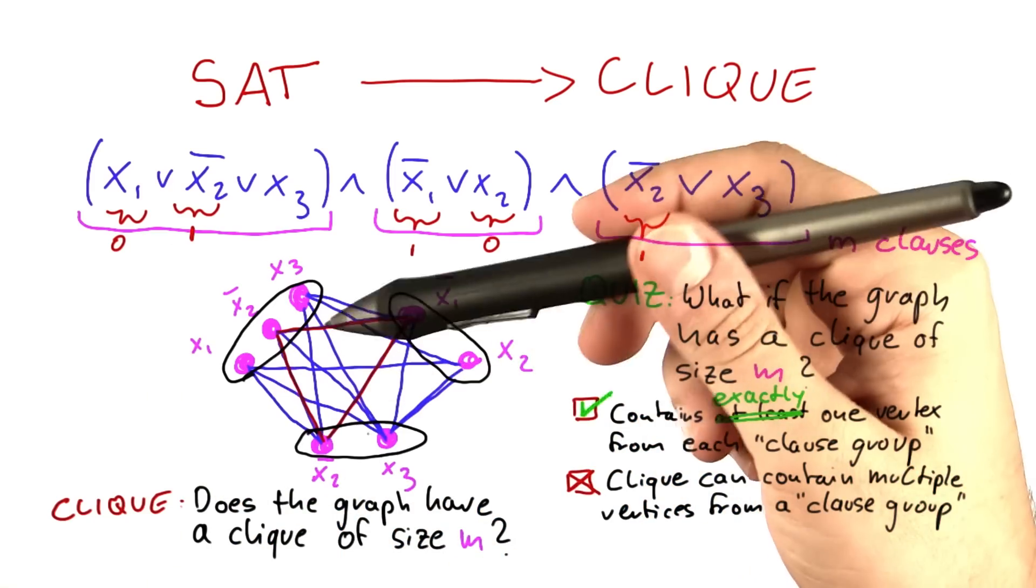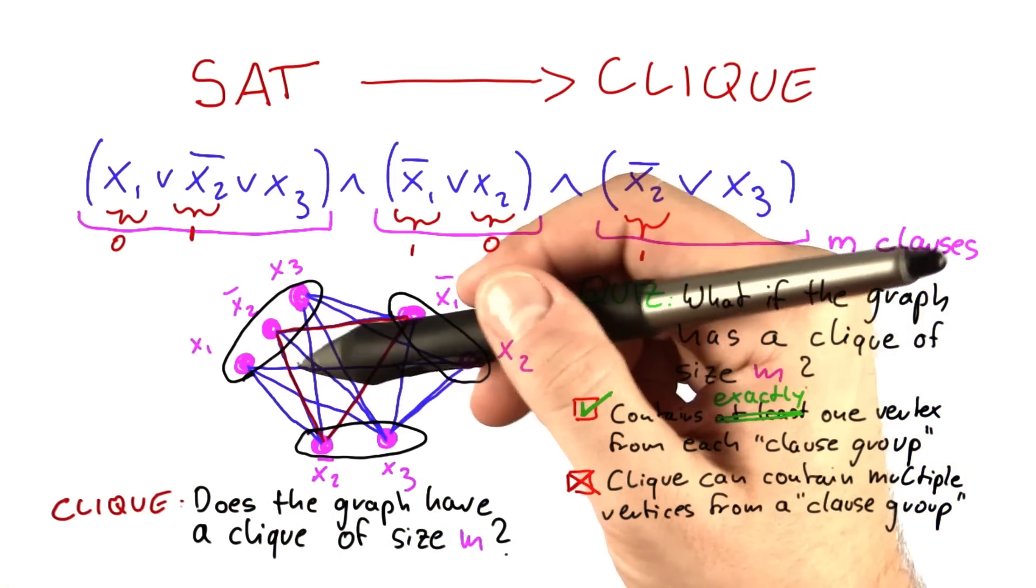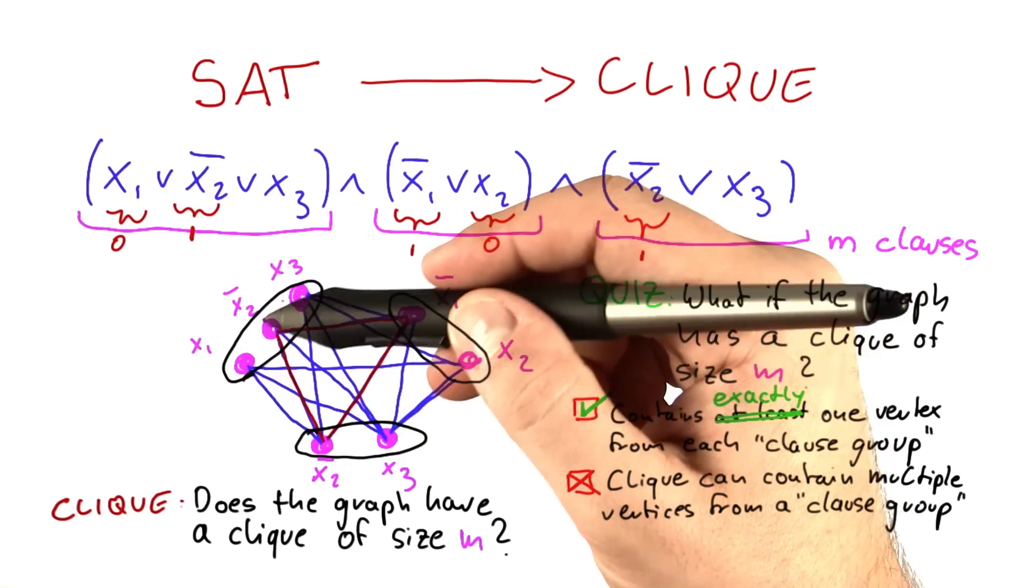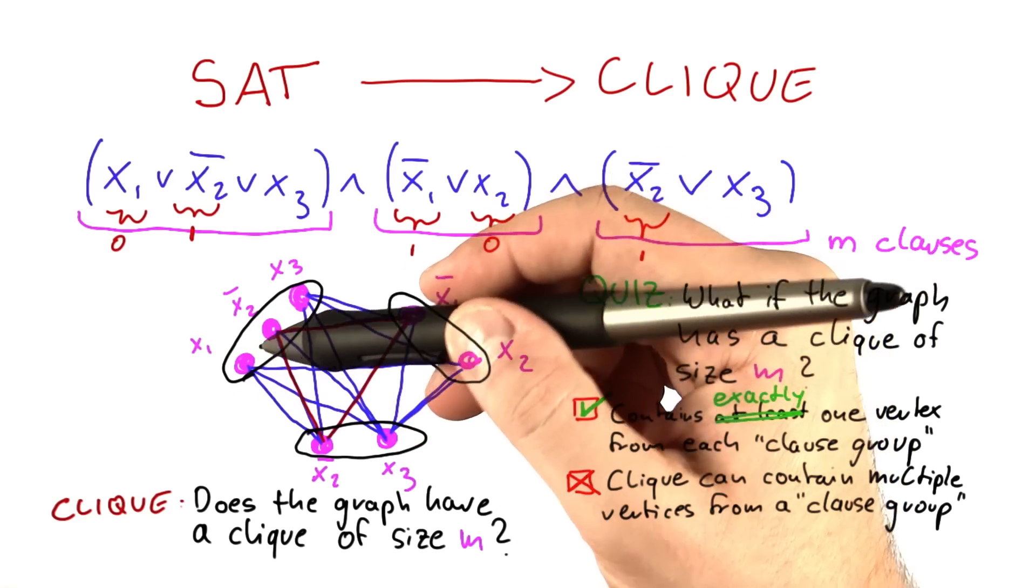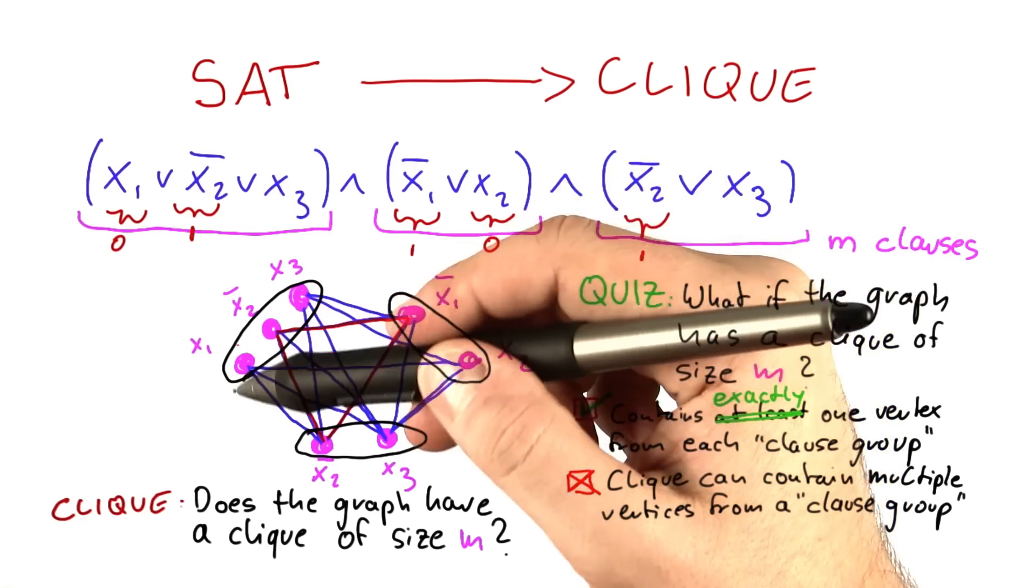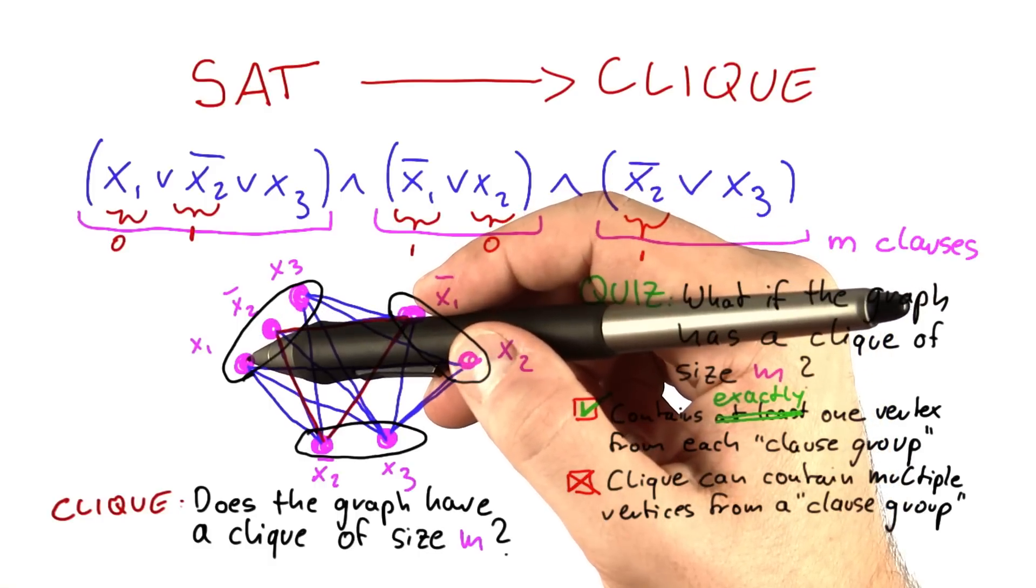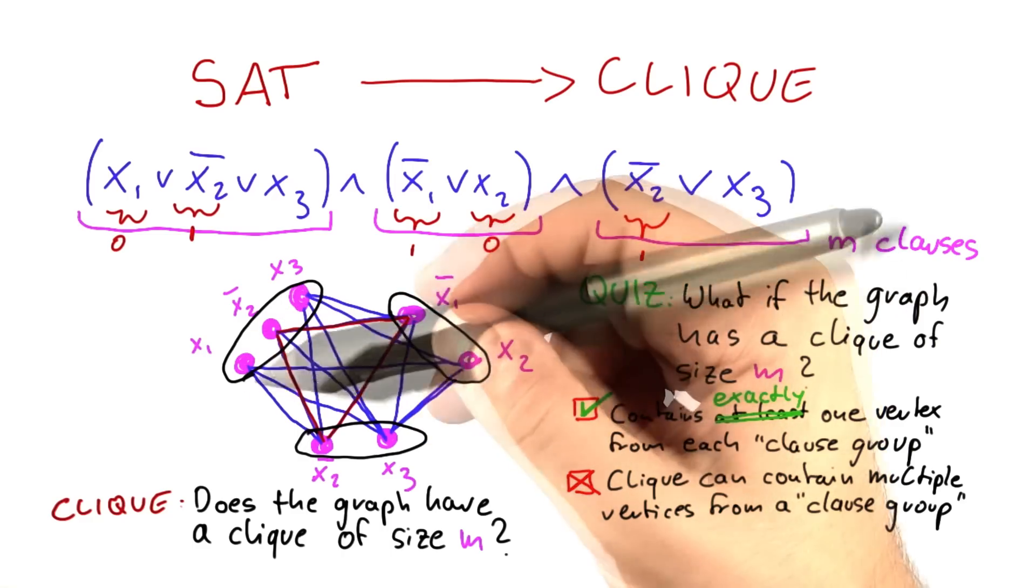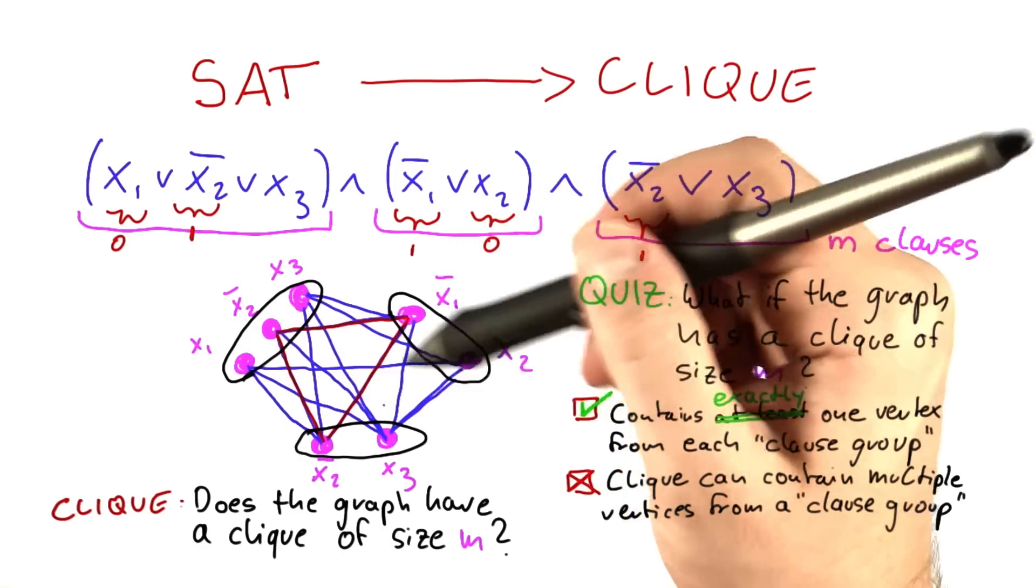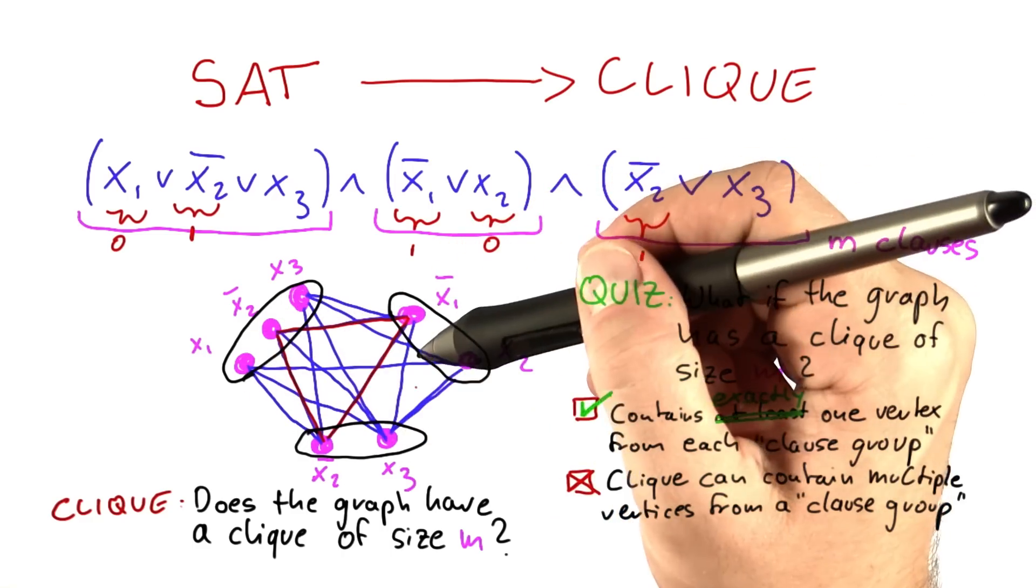So what if this graph here does not have a clique of size M? Well, in this case it means that we have one clause group which is not contained in the clique. And if we have one clause group that is not contained in the clique, this means that there's no vertex in the clause group that has connections to all of the other vertices in the smaller clique that we're looking for.